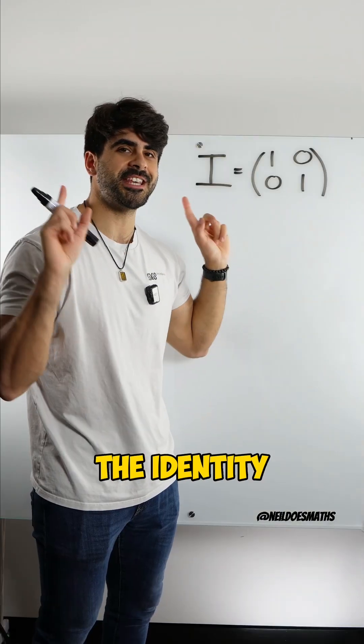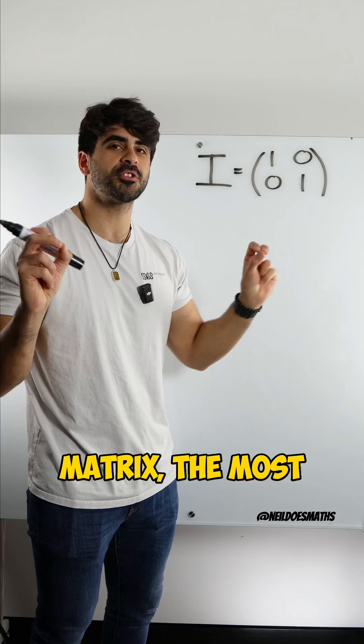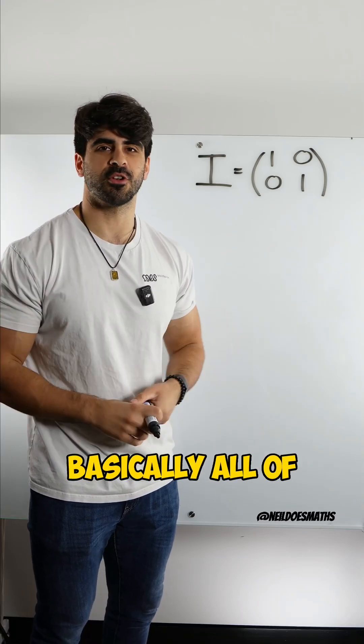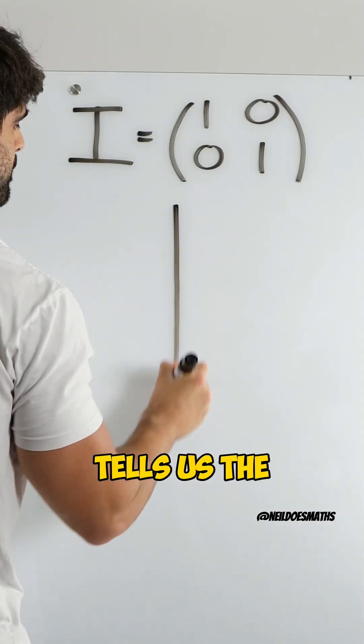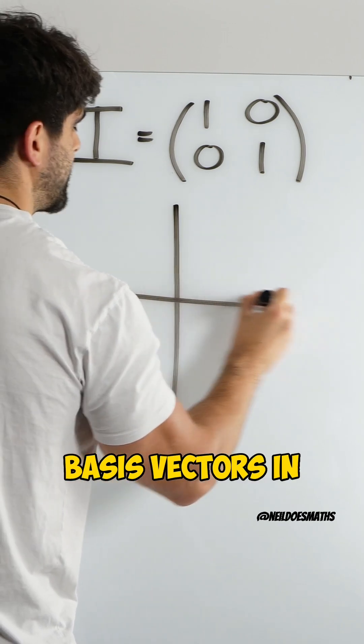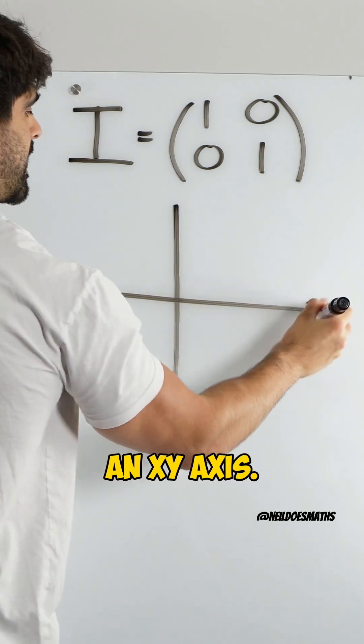This right here is known as the identity matrix, the most important matrix in basically all of mathematics. And what it does is it tells us the position of the basis vectors in an xy-axis.